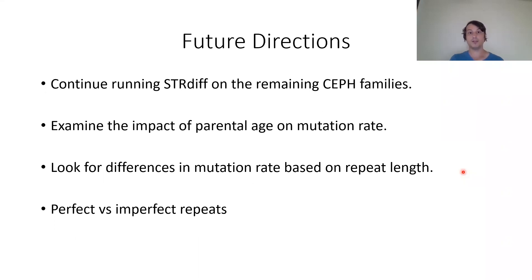Moving forward, we plan to continue running STRDIFF on the remaining families to assess parental transmission bias and parental age effects on mutation rate — Tom saw a strong paternal age effect for SNVs. We'd also like to look for differences in mutation rate based on repeat length, and examine perfect versus imperfect repeats: a perfect TA repeat uninterrupted versus an imperfect repeat with internal mutations disrupting the motif.